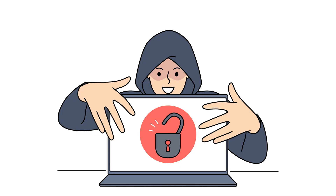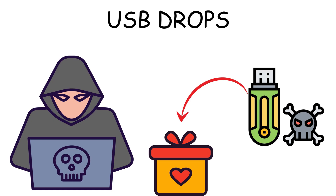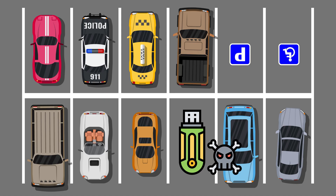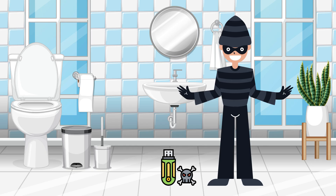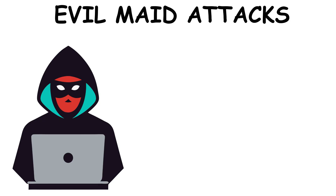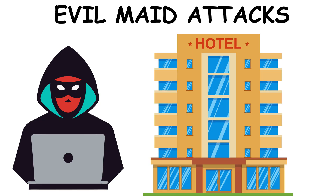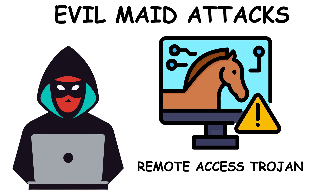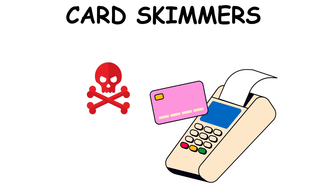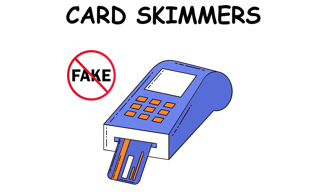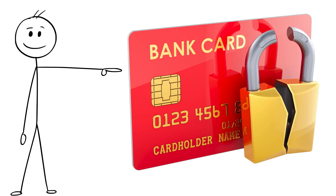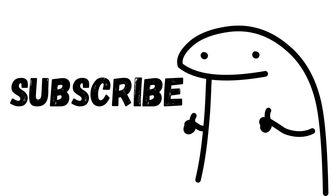Method 9: Physical Access Attacks. Physical access equals total compromise. USB drops: hackers leave infected USB drives in parking lots or bathrooms — curiosity kills security. Evil maid attacks: hackers access your laptop, e.g. in a hotel room, and install keyloggers or RATs in minutes. Card skimmers on fake ATM and credit card readers steal your card data, resulting in emptied bank accounts and corporate espionage.